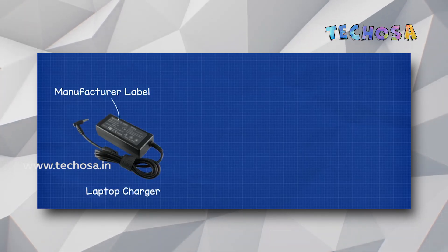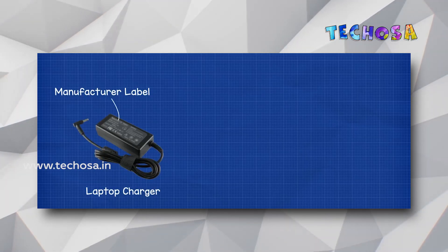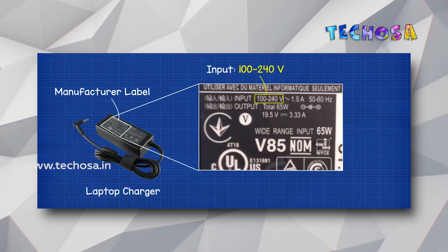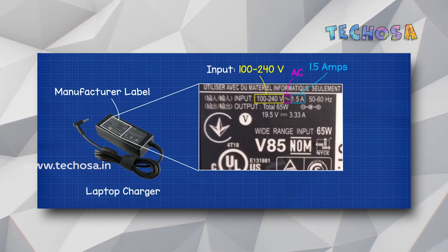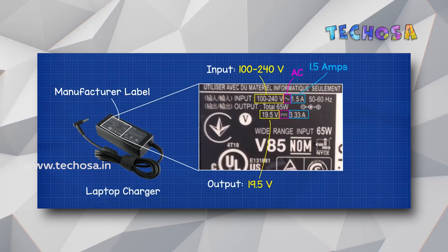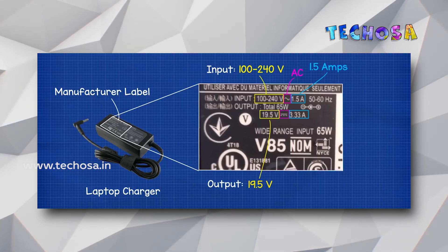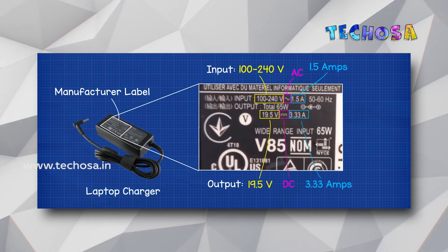Every electrical appliance has labels on it that tell us its voltage rating. If we look at a standard laptop charger, we will see that it works with an input voltage of 100 to 240 volts and 1.5 amps of AC, or alternating current. It will then produce an output of 19.5 volts and 3.33 amps of direct current. What is AC and DC? Direct current and alternating current are two types of electric current. The current from the power socket of a home is alternating current.